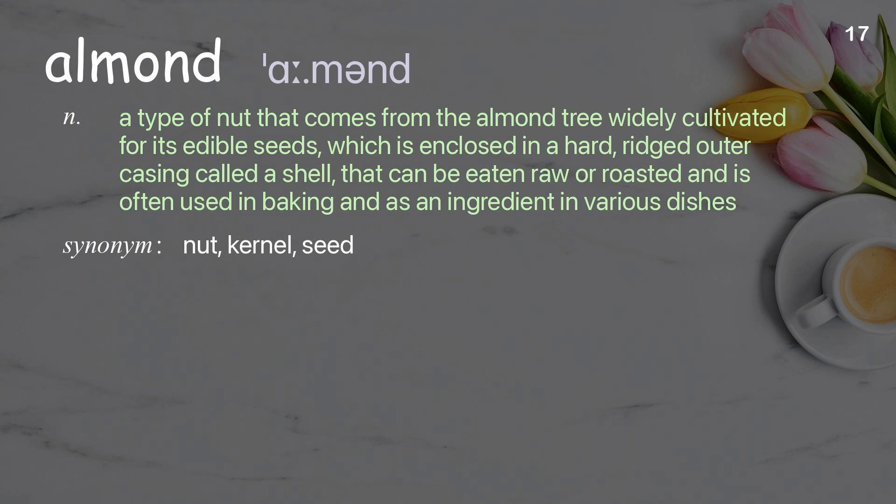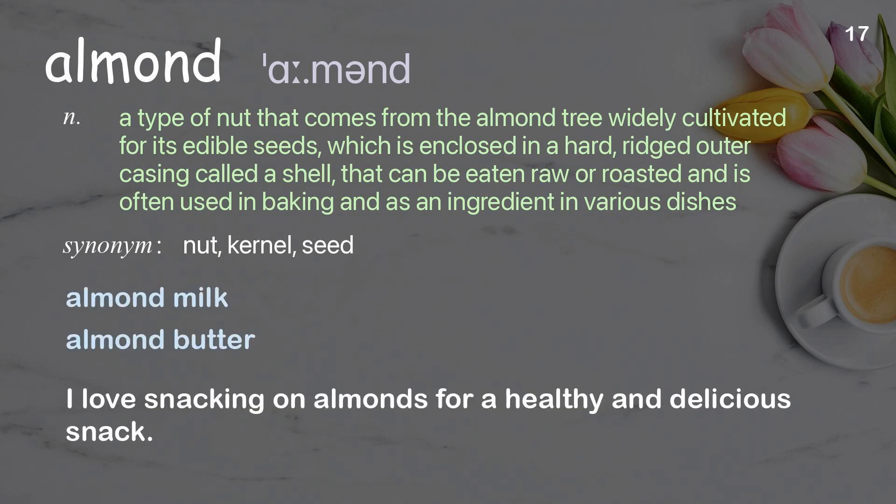Almond: A type of nut that comes from the almond tree, widely cultivated for its edible seeds, which are enclosed in a hard, ridged outer casing called a shell, and can be eaten raw or roasted and is often used in baking and as an ingredient in various dishes. Examples: Almond milk. I love snacking on almonds for a healthy and delicious snack.